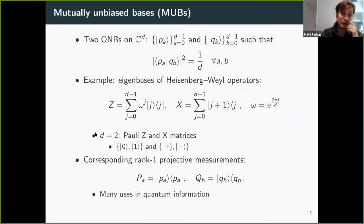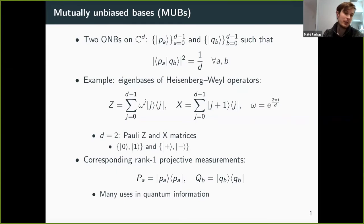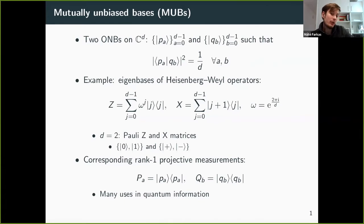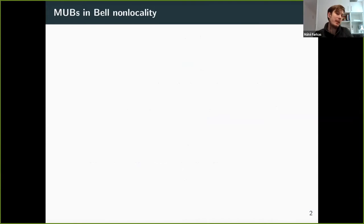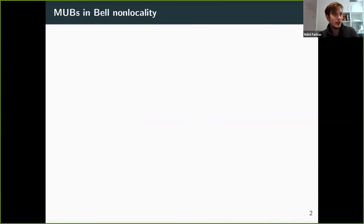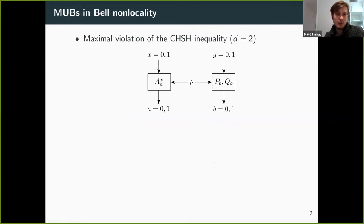These measurements turn out to be very useful in various quantum information processing tasks, such as state determination or various quantum communication tasks. The only thing I will focus on in this talk regarding MUBs is their role in Bell non-locality. We've heard some talks on Bell non-locality today — for example, in Jed Kaniewski's talk just before lunch we heard about the CHSH inequality, which might make my job a little bit easier.